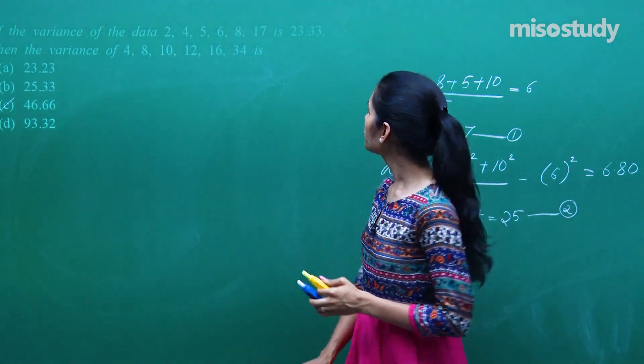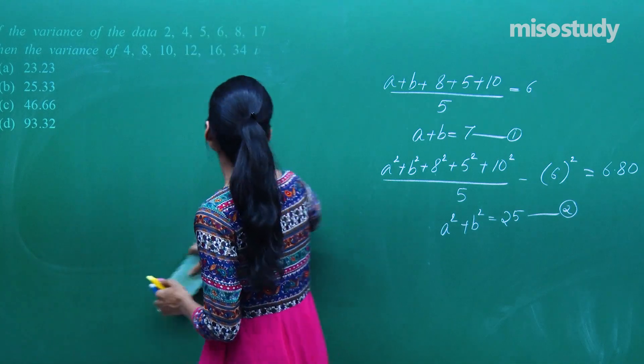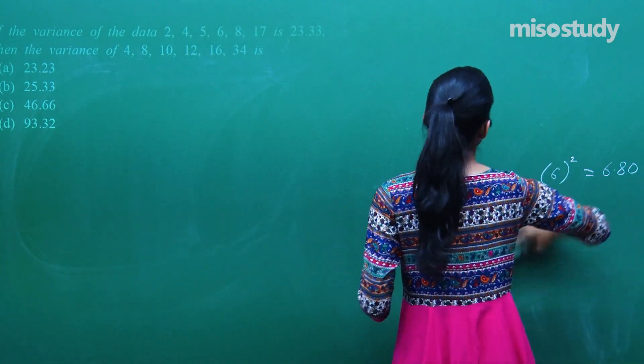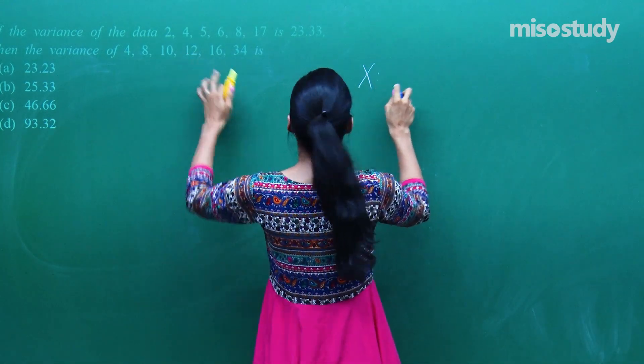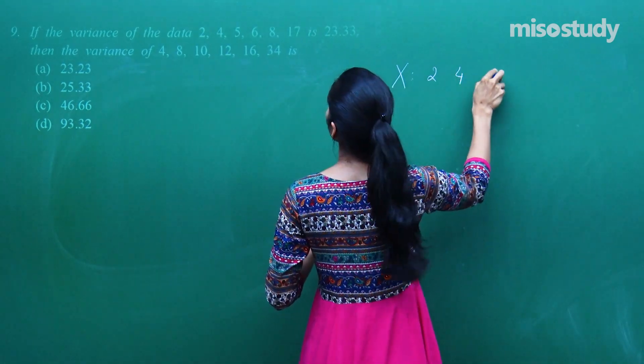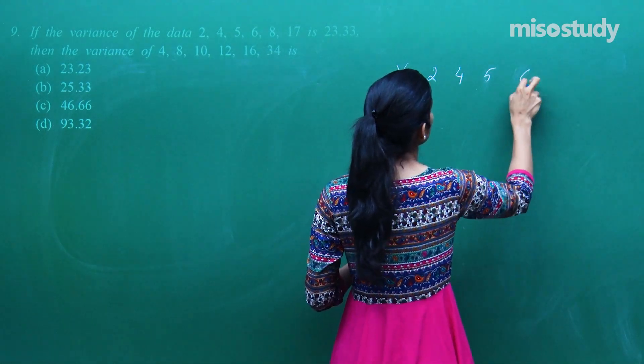If the variance of this data is 23.33 then the variance of this data will be what? Ab relation dekho dono data mein. Agar mein capital X ko random variable banaati hoon jo values le raha hai 2, 4, 6, 2, 4, 5, 6, 8 and 17, to ye bohot clear hai ki twice of x kya value lega? 2 into 2, 4, 2 into 4, 8, 2 into 5, 10, 2 into 6, 12, 2 into 8, 16.